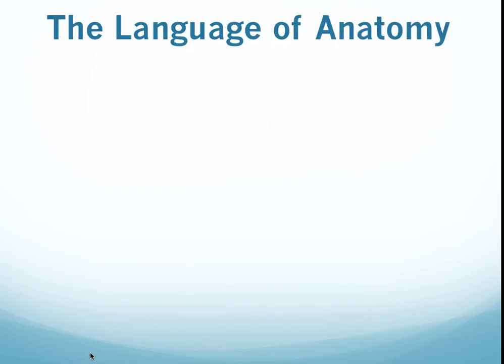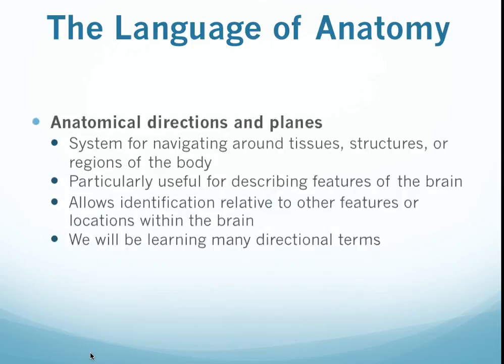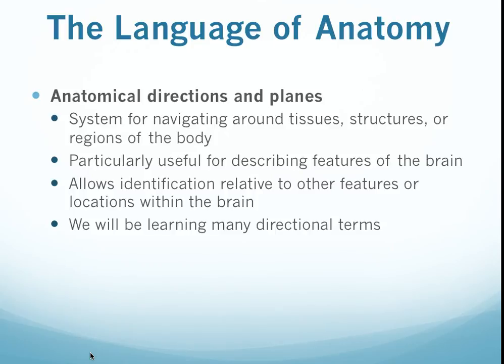So we're going to start out with that. First of all, anatomy has its own sort of language, and neuroanatomy definitely has its own language as well. We're going to be talking about what we call anatomical directions and planes. This is going to help us to get around and to be able to identify and describe different structural aspects or features of the brain, and also to compare one feature or one structure to another.